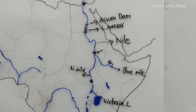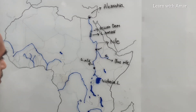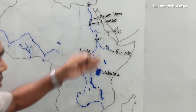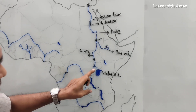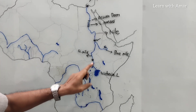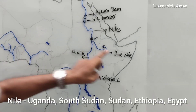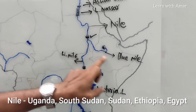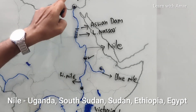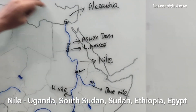This is all about River Nile. Now let us see how many countries it flows through. It started its journey from Uganda, then South Sudan, then Sudan. Blue Nile originates from Ethiopia, then it is Egypt. Finally, it joins the Mediterranean Sea at Alexandria.